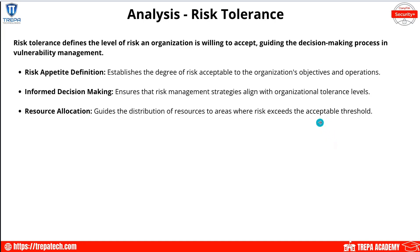Risk tolerance defines the level of risk an organization is willing to accept and guides the decision-making process. A low risk appetite means every vulnerability is very important and must be addressed. A high risk appetite means that if fixing something takes resources away from business-enabling activities, it may remain vulnerable. We want to ensure our risk management strategies align with the organization — we're there to enable the business to be profitable and must align with risk appetite and tolerance.